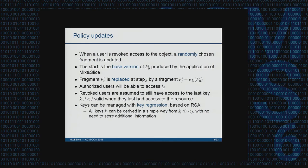With this structure we can manage a policy update in an efficient way. Every time we have to manage a revocation, rather than re-encrypting the whole resource with a fresh key, we just randomly choose a single fragment to update and only update that fragment. This saves a great deal for policy updates and gives us a more efficient management of revocation.